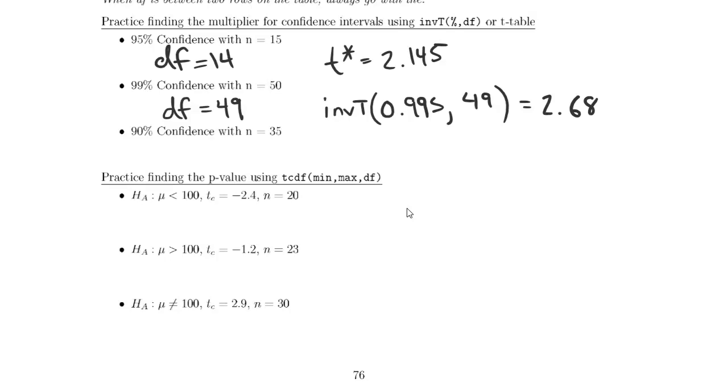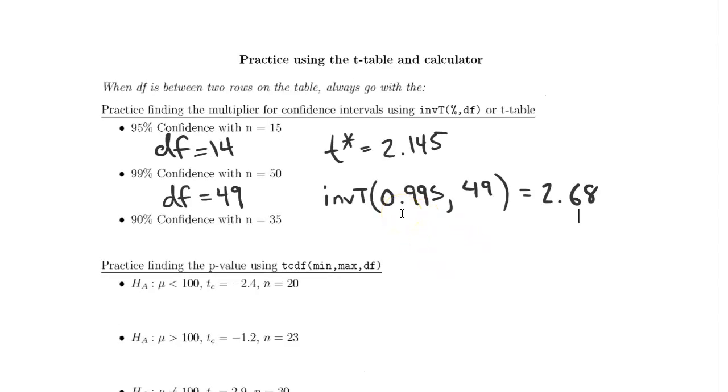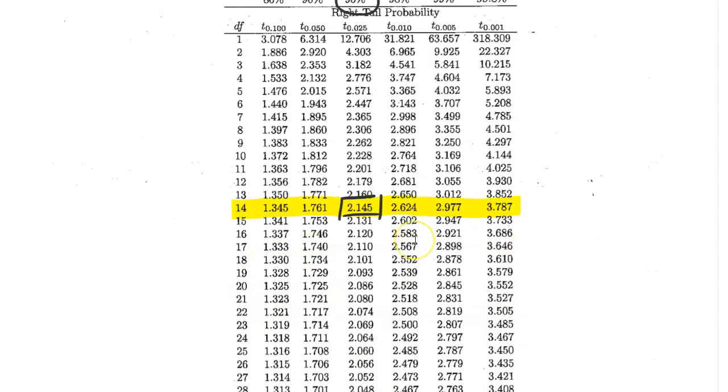Then we want to do 90% confidence with n equals 35. With n equals 35, we're going to run into the issue that there's not a row for df equals 34 on our table. So when df is between two rows on the table, we're always going to go with the smaller or more conservative estimate.